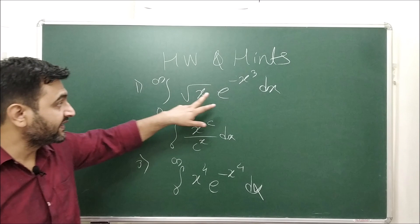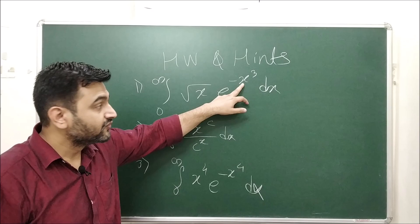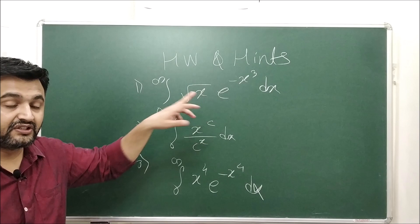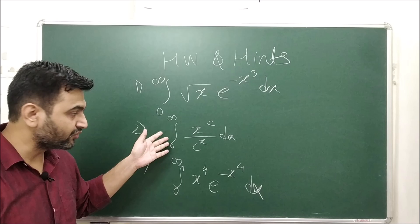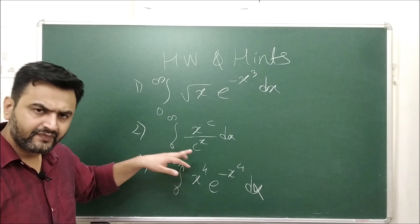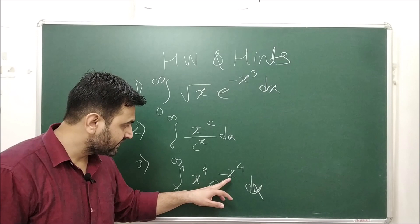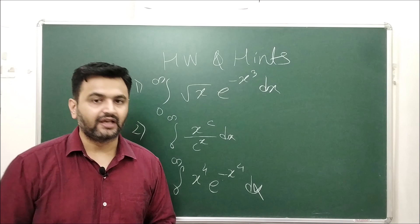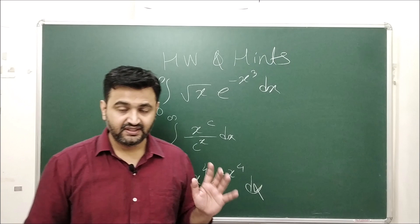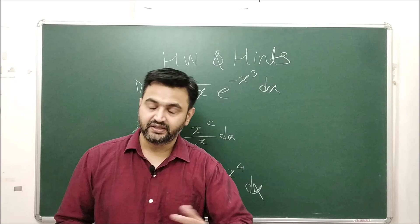Here are some homework problems. First, ∫₀^∞ e^(−x³) dx — hint: put x³ = t to get e^(−t), then apply the gamma function definition. Second, ∫₀^∞ x³ · c^(−x) dx — same as the example we just solved, write c^(−x) = e^(−x ln c) and proceed similarly. Third, ∫₀^∞ e^(−x⁴) dx — put x⁴ = t. The key trick: whenever you see 0 to infinity with e raised to something, think of gamma function. Post your answers in the comments, and if you get stuck, feel free to ask.